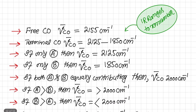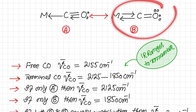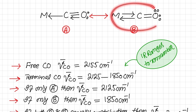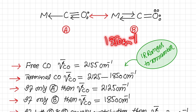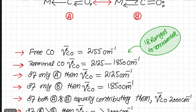There are two cases giving 1850 per centimeter: one where Structure B is completely dominant, and one where a bridging carbonyl is present. We differentiate them by charge: if the metal has a negative charge and the value is 1850 per centimeter, it is due to extreme backbonding. If the molecule is neutral and the value is around 1850 per centimeter, it indicates a bridging carbonyl with a ketone-like C=O.